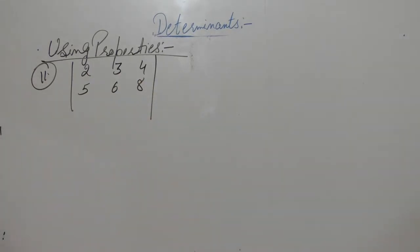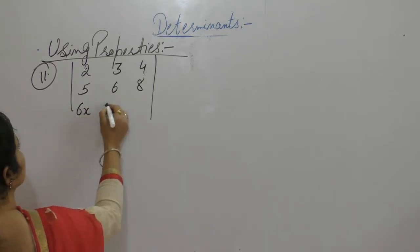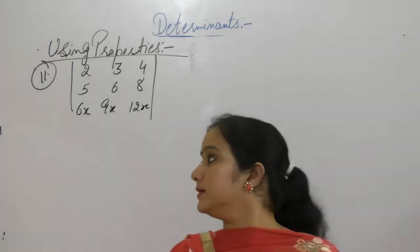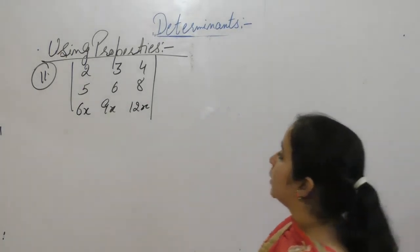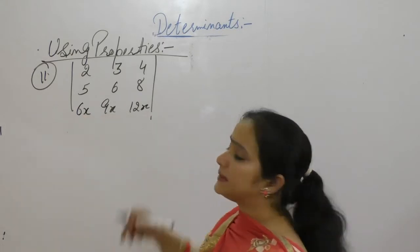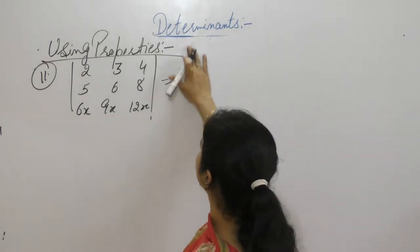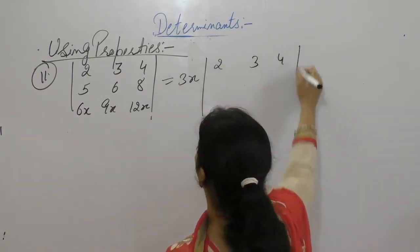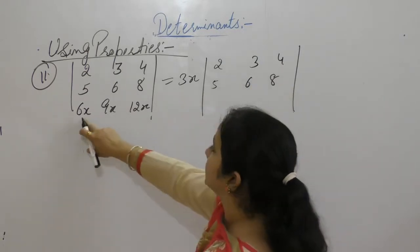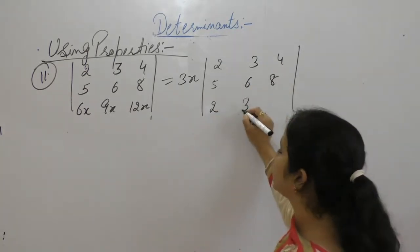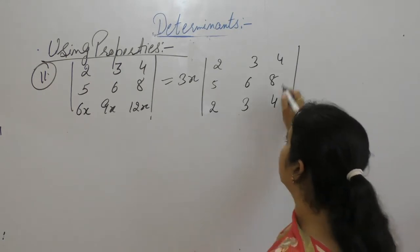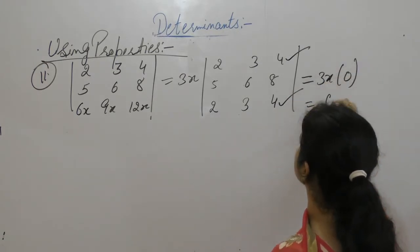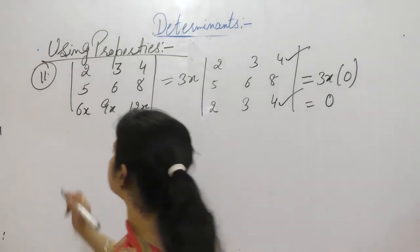The matrix is: row 1: 2, 3, 4; row 2: 5, 6, 8; row 3: 6, 9X, 12X. Find the value of the determinant. In the third row all entries are multiples of 3X, so we take 3X common from the third row, giving row 3 as 2, 3, 4. Now the first row and the third row are identical, therefore the determinant is 0, and 3X into 0 is 0.